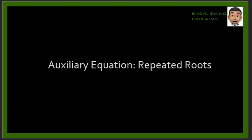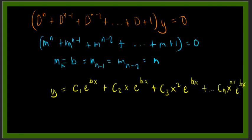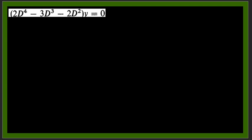Okay, so we are still on our discussion on auxiliary equation with repeated roots and now we'll be solving another example. This is the general solution for the auxiliary equation with repeated roots as we discussed in the previous video. So now we have this differential equation: 2D to the power of 4 minus 3D cube minus 2D squared y equals zero.